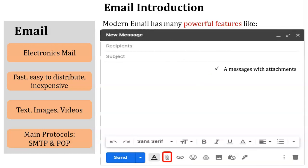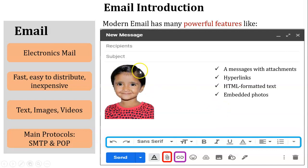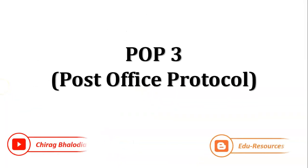The first feature is messages with attachments — we can send doc files and multimedia files through email. Next is hyperlinks: using a hyperlink you can add an external link in the mail body. Next is HTML formatted text: you can write HTML formatted text in the message body. Next is embedded photo: you can drop a photo directly inside the message body, so no attachment is needed — the photo is displayed in the message body.